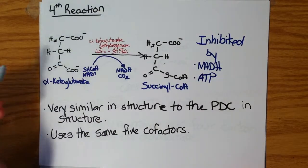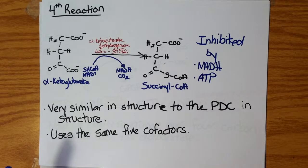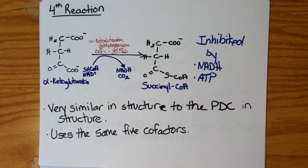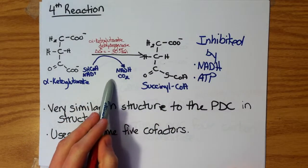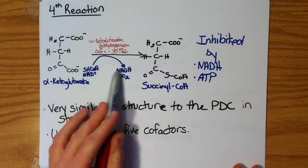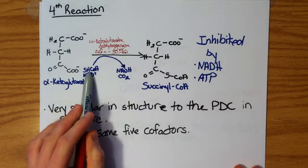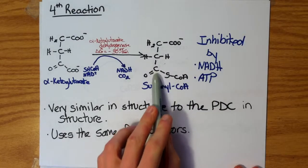The alpha-ketoglutarate dehydrogenase is a complex structurally very similar to the pyruvate dehydrogenase complex, and its mechanism is essentially the same as well. It uses the same five cofactors, and therefore we see the same kinds of products: a reduction of NAD+ to NADH, a release of CO2, and an attachment of coenzyme A to the terminal carbon.